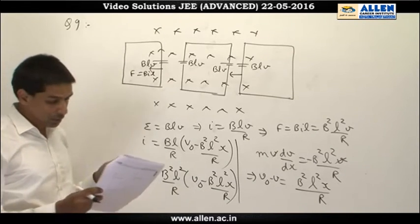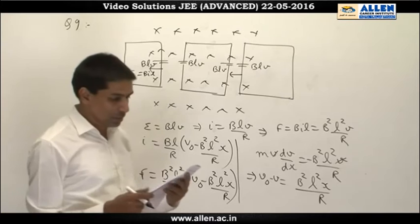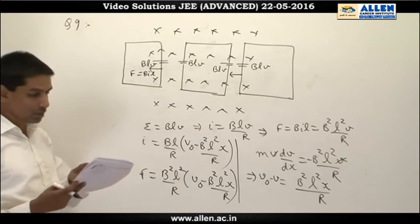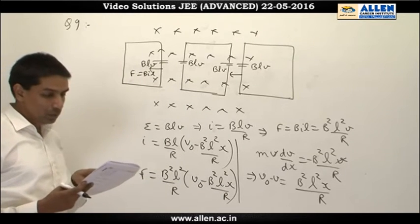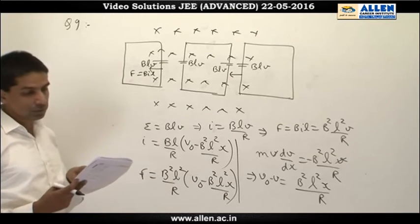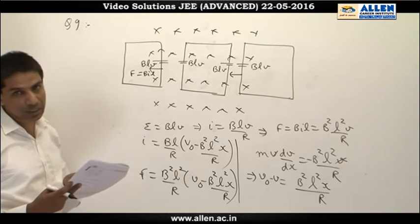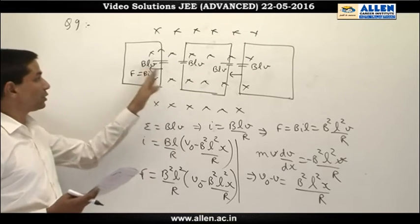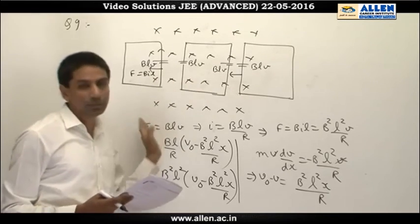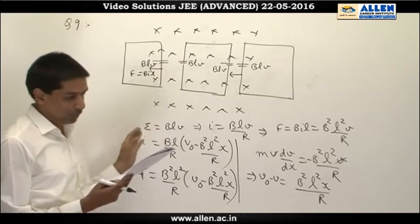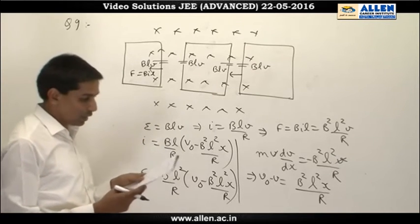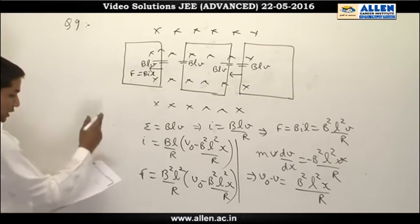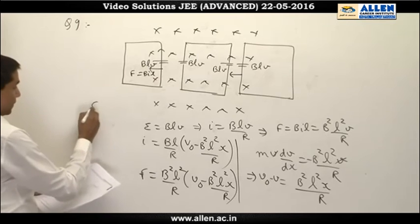In option B, although the force is given as a linear relationship, what they are saying is that the force is changing its direction, which cannot be correct — because in both cases the force is acting in the backward direction only. So the only correct options are C and D.